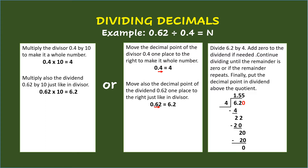Next, divide 6.2 by 4. Divide decimals just like whole numbers. Add zero to the dividend if needed. Continue dividing until the remainder is zero or if the remainder repeats. Finally, put the decimal point in the dividend above the quotient. Dividing 6.2 by 4 gives you 1.55. Note that we add a zero in the dividend and continue dividing until the remainder is zero.